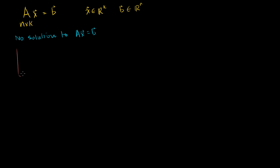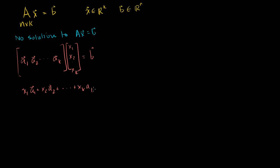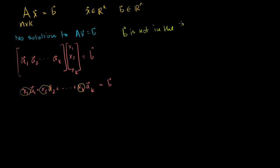What does that mean? Let's expand out A. If I write A as its column vectors A1, A2, all the way through Ak, and multiply it times x1, x2, all the way through xk, this is the same thing as x1 times A1 plus x2 times A2, all the way to xk times Ak, equal to the vector b. If this has no solution, then there's no set of weights on the column vectors of A to get to b — no linear combinations of the column vectors of A will equal b, or b is not in the column space of A.